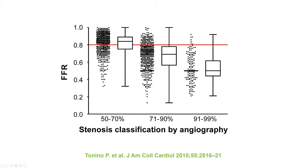For example, lesions with 71–90% stenosis may have an FFR greater than 0.80, suggesting they are not hemodynamically significant. Conversely, lesions less than 70% stenosis can still be significant by FFR. This highlights the imperfect relationship between angiographic appearance and functional significance.